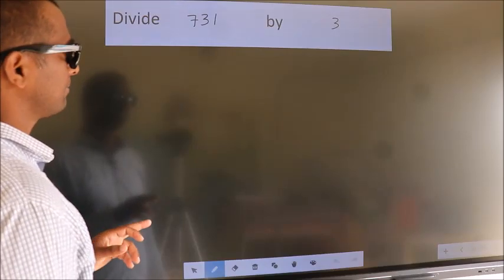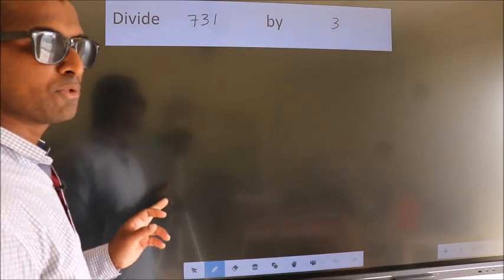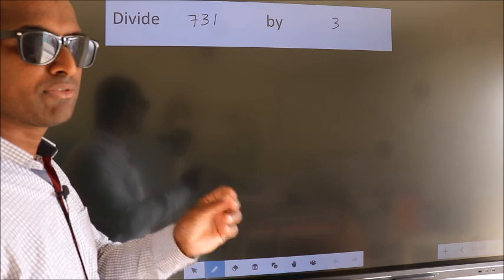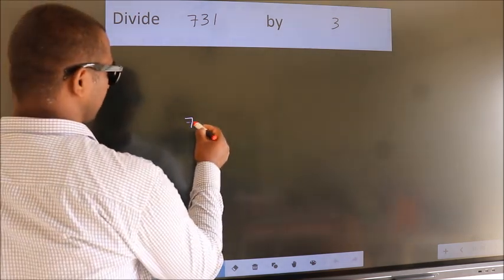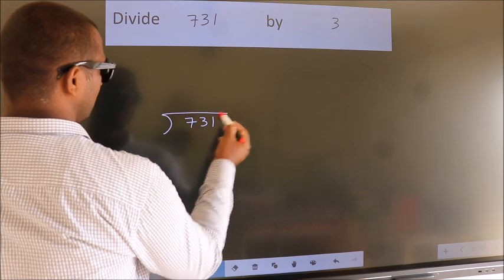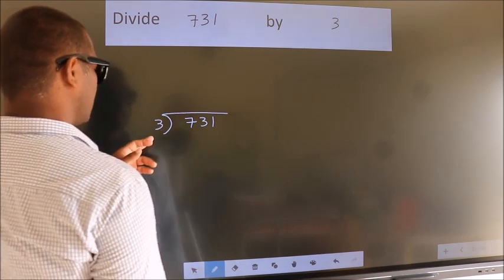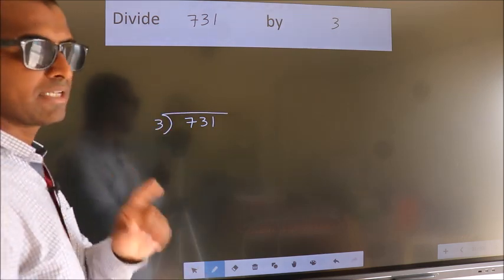Divide 731 by 3. To do this division, we should frame it in this way. 731 here, 3 here. This is your step 1.